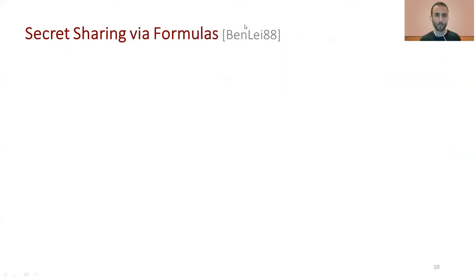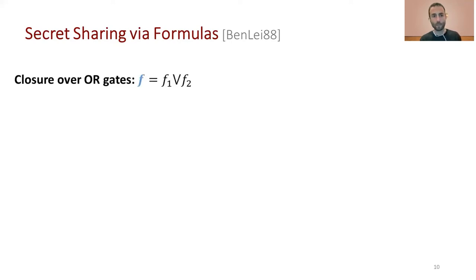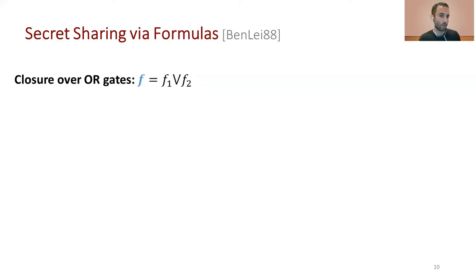Now we discuss a basic property of secret sharing that connects it to monotone formulas — which is the first step toward connecting secret sharing to formulas with special gates. This property is closure over OR and AND gates: if it is easy to share the secret according to two functions f1 and f2, then it is also easy to share it according to their disjunction or their conjunction.